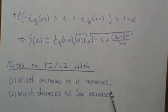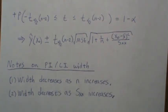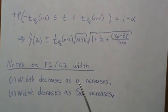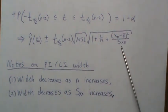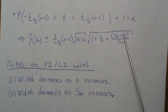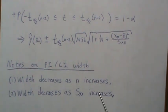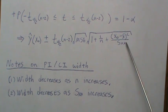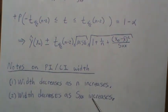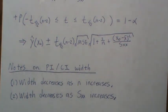A couple of general notes: the width of both the prediction interval and confidence interval decreases as n increases, because Sxx gets larger, making the term inside the square root smaller. The width also decreases as Sxx increases — if we spread out our independent variable x values, Sxx becomes large, which makes the interval narrower. These are a couple of ways we can decrease the widths of our prediction intervals and confidence intervals.